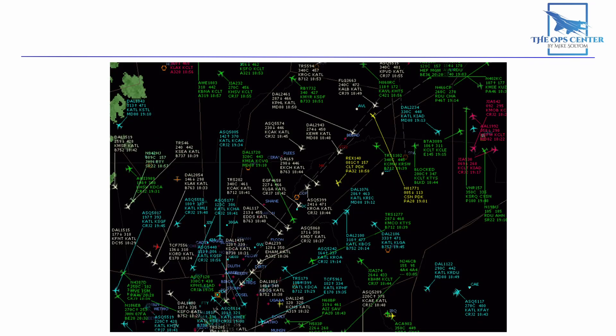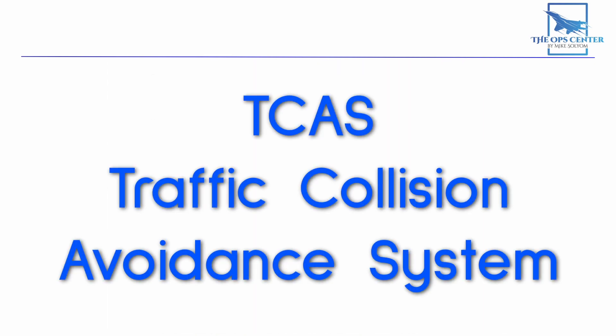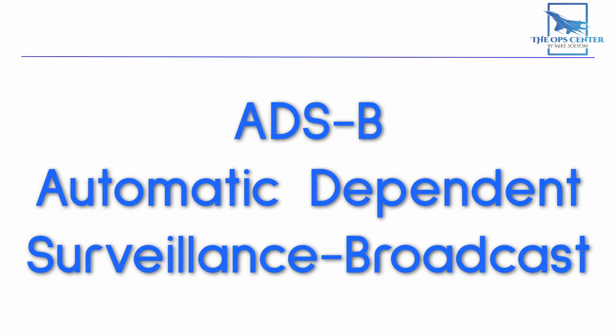Mode S also enables other systems like TCAS, which allows aircraft to communicate directly with each other for collision avoidance. It can also participate in ADS-B, which does things like help rescuers locate the plane if it crashes. And it's all backwards compatible with Mode A and C.